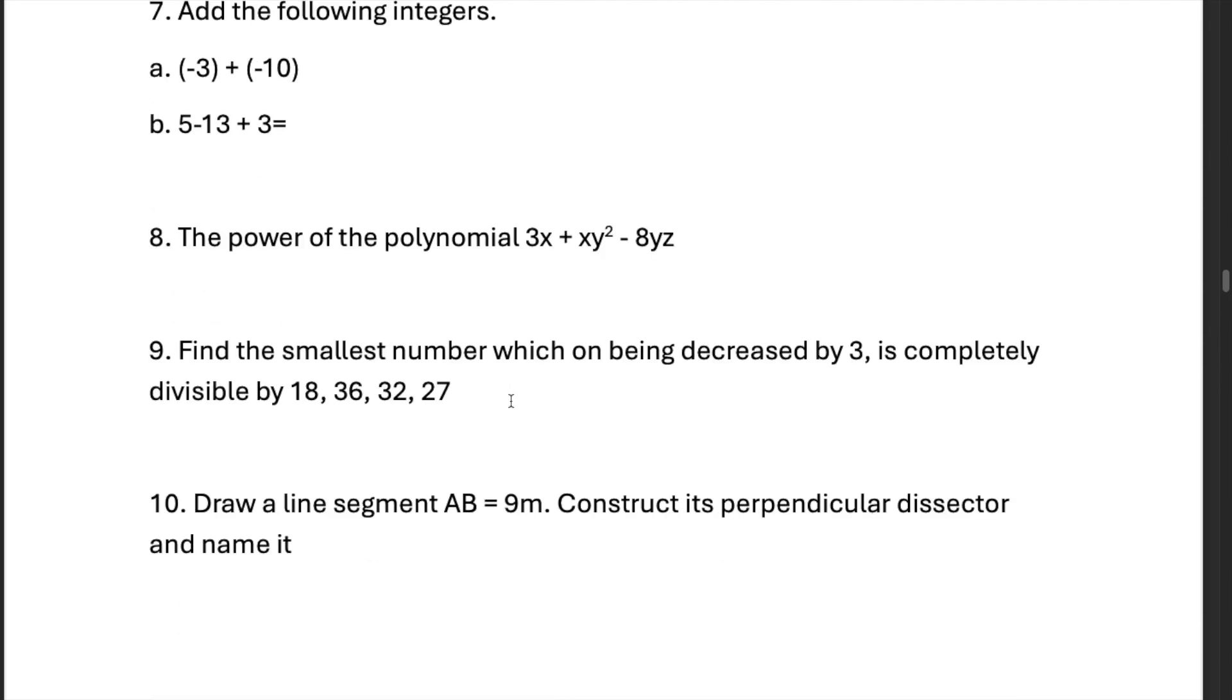The power of the polynomial 3x plus xy raised to 2 minus 8yz is. Now remember, this has got multiple variables. So the power should be the maximum of the sum of each variable.